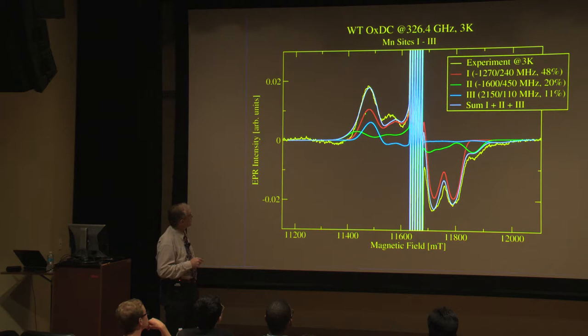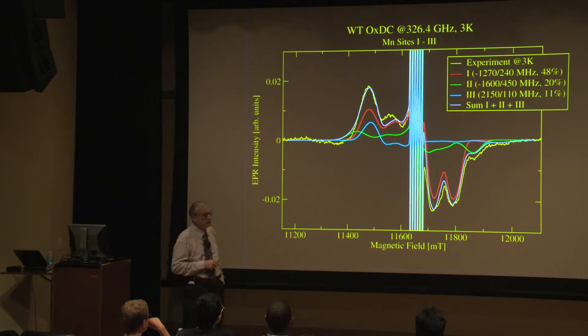The yellow line represents the actual spectrum measured, the raw data at three Kelvin. The white line is the sum of three simulated species that are listed here. The red one here is doing a pretty good job, almost half the intensity here. We're going to ignore the sextet in the center because that is the signal I'm not interested in at the moment. I see these double peaks here, so that's good as well. But that doesn't explain the whole spectrum. That's site number one, with a negative D of 1270 megahertz and an E parameter, the asymmetry parameter, of 240 megahertz.